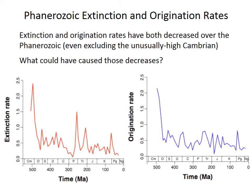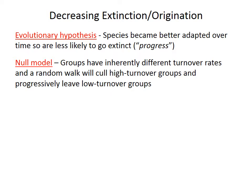So this pattern is interesting in itself, but really the significant question is why — why does extinction rate and origination rate decrease through the Phanerozoic? One possibility is that extinction and origination rates decrease because species actually become better adapted over time. In an evolving lineage of ancestor and descendant species, the descendants could become progressively better adapted to environmental conditions, biotic interactions, or other constraints, so it might be less likely to go extinct or evolve into another species.